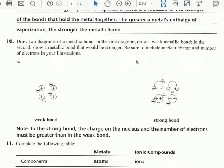Number 10, draw two diagrams of a metallic bond. In the first diagram, draw a weak metallic bond, and in the second, show a metallic bond that would be stronger. Be sure to include nuclear charge and number of electrons in your illustrations.